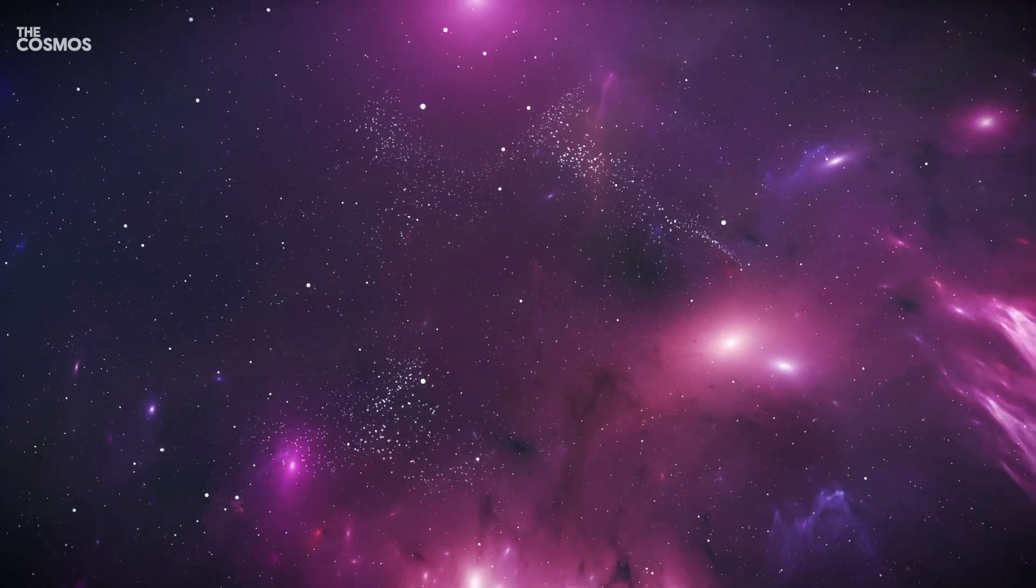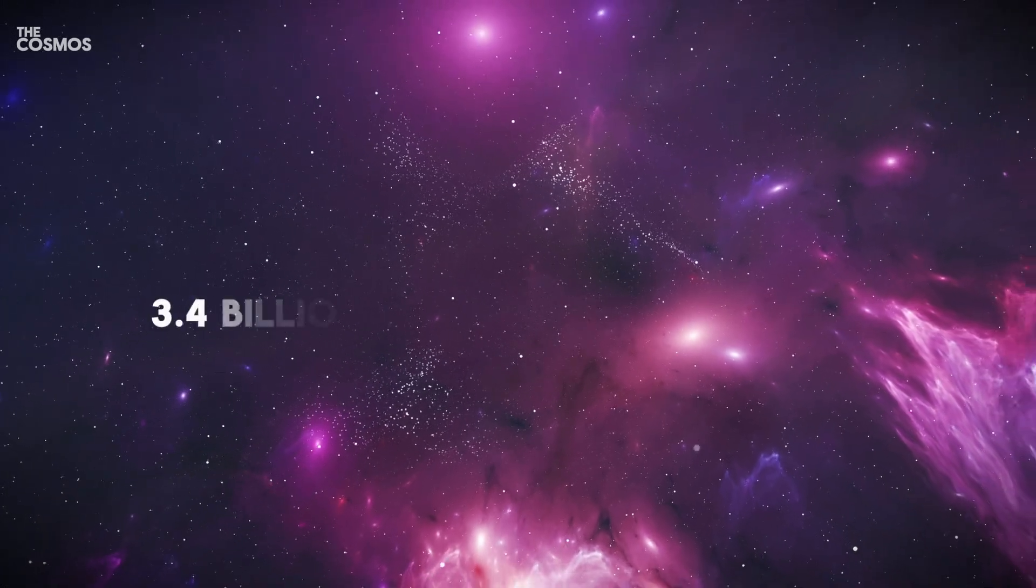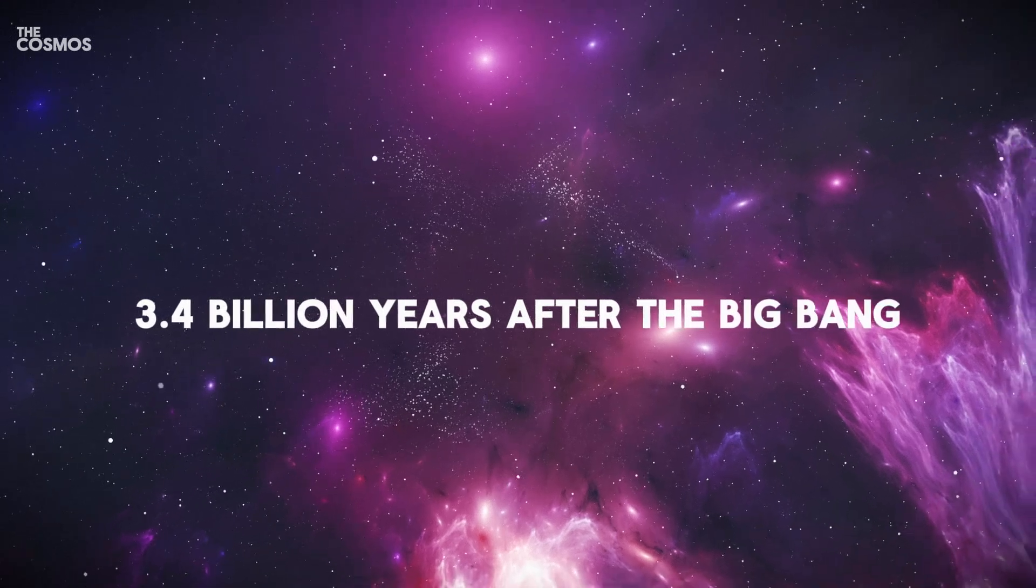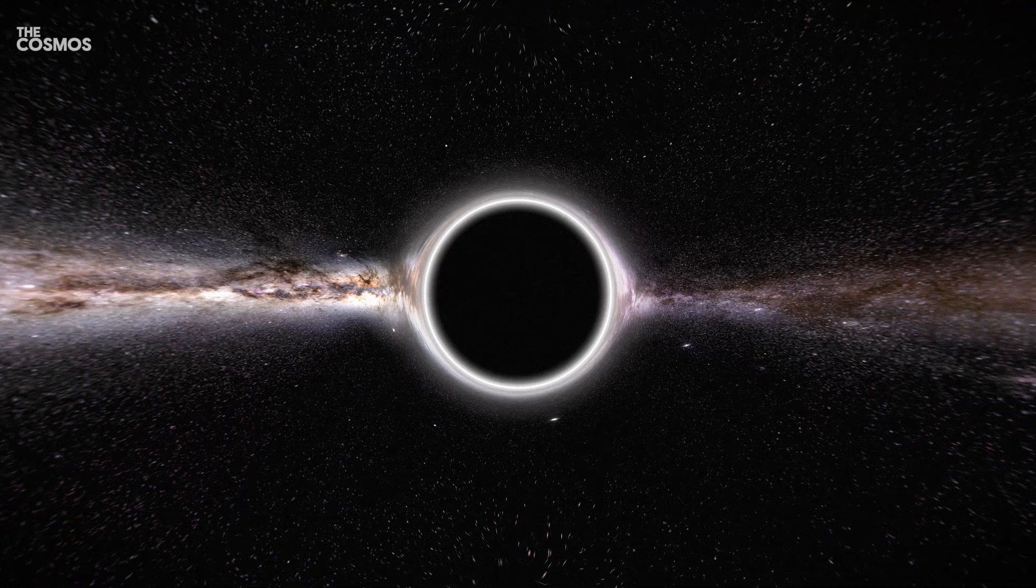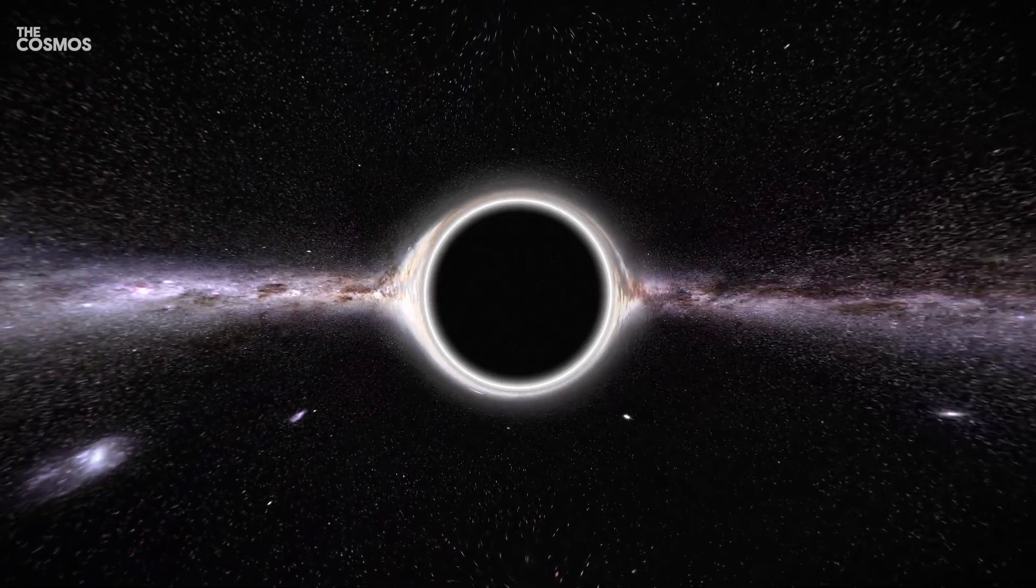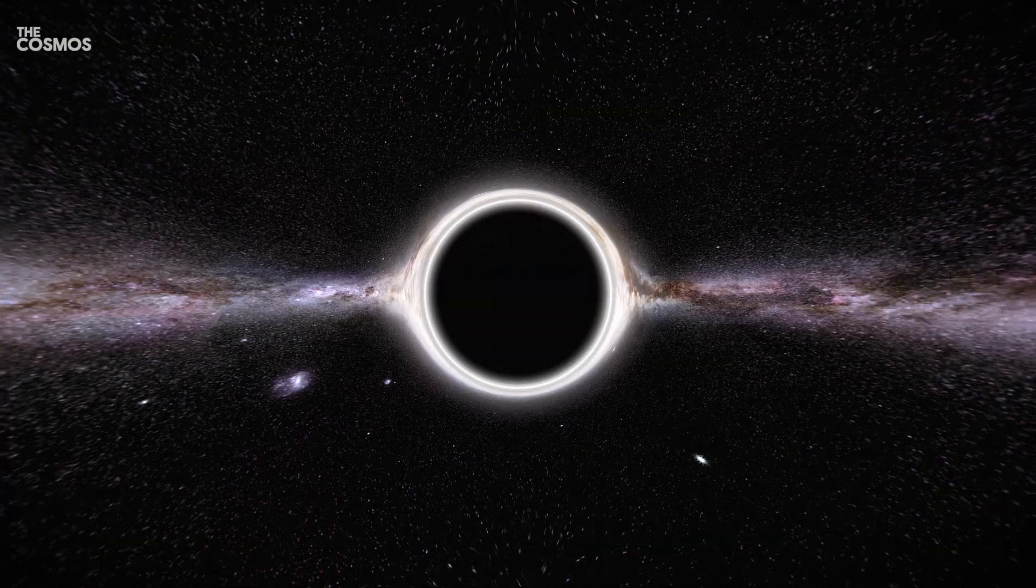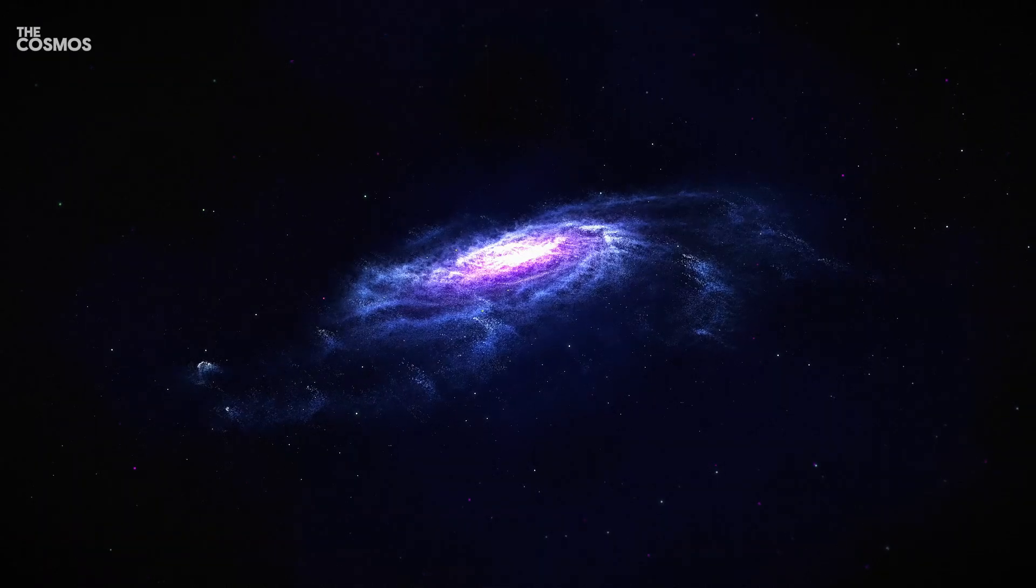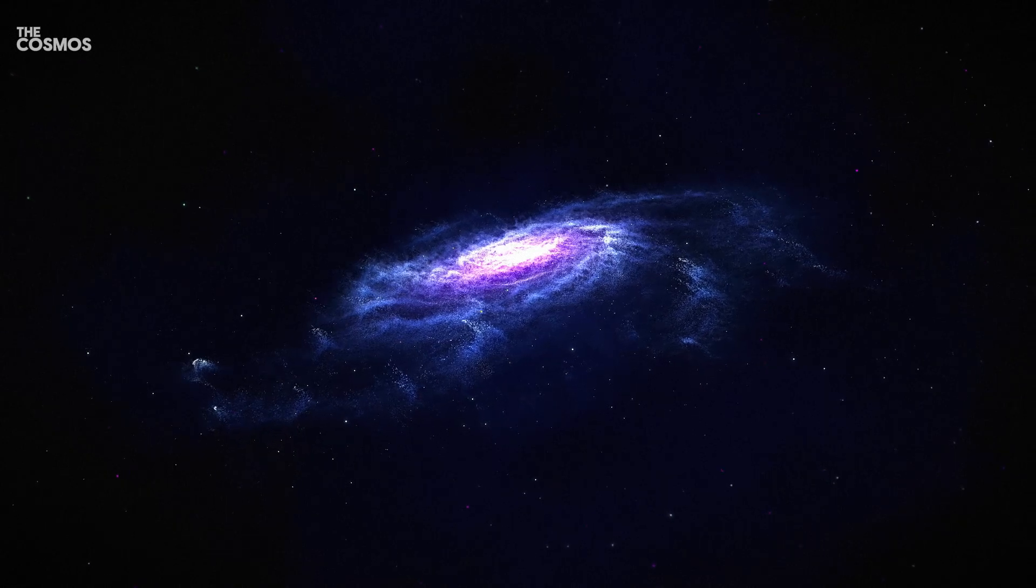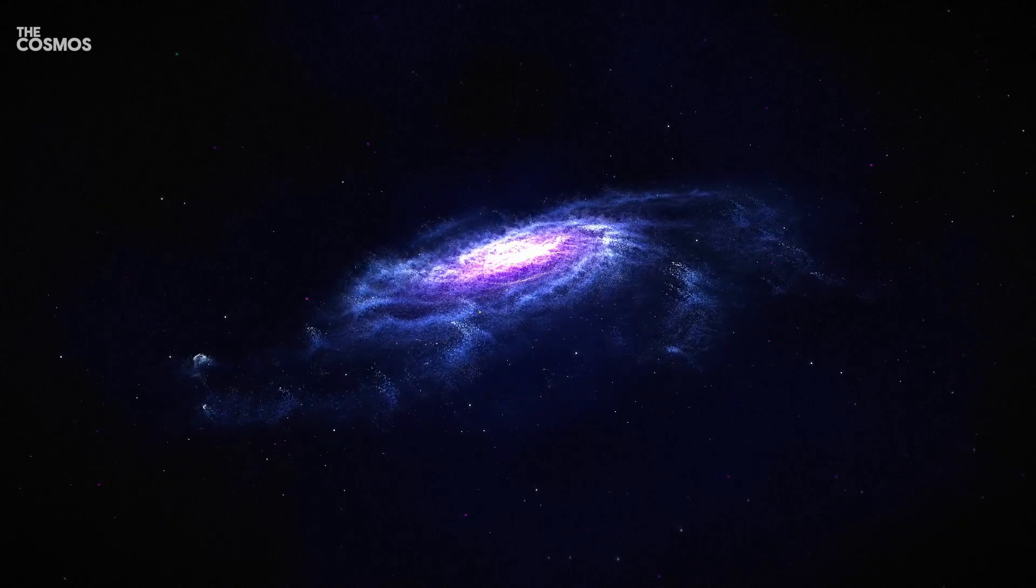Located at the frontier of time, a mere 3.5 billion years after the Big Bang, this galaxy isn't just a glimpse into the past. It's a natural cosmic lens that magnifies and distorts the light from objects behind it, creating a stunning Einstein ring, a direct observation of the phenomenon of strong gravitational lensing, as predicted by Albert Einstein's theory of general relativity.